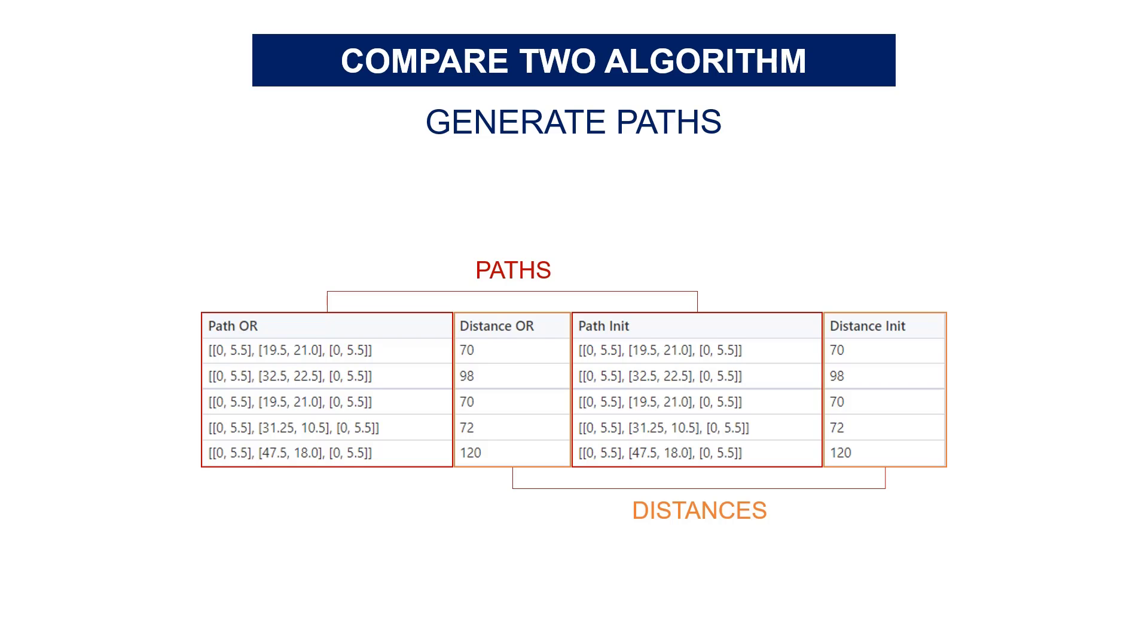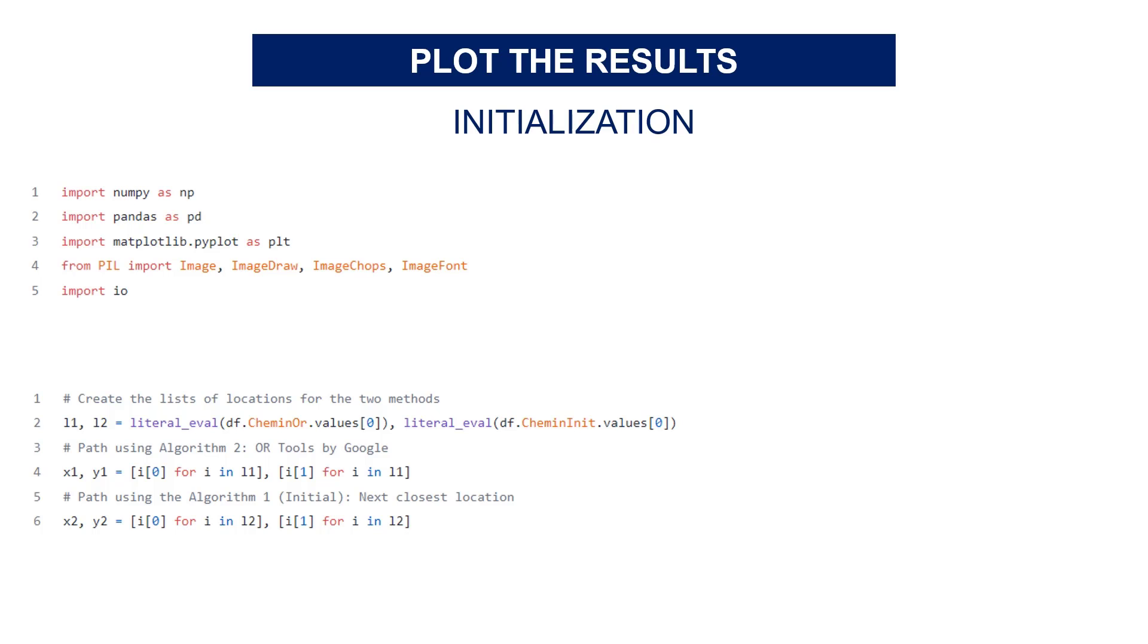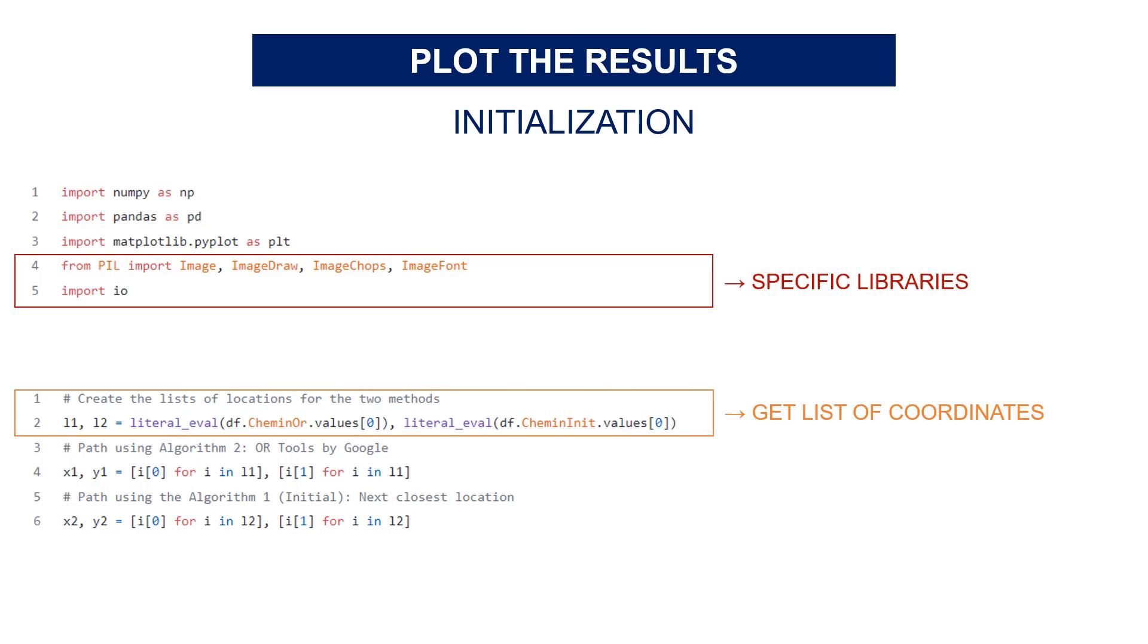And you have the total distance of the route for each algorithm. With these two arrays, you can start to plot the results. So we start by importing the libraries and input data. In addition to Pandas and Matplotlib for manipulating dataframes and plotting them, we need to add Pillow with some specific functions.